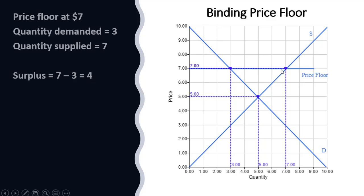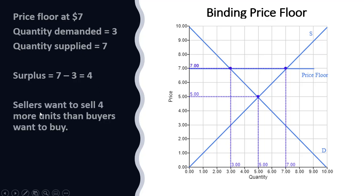We can visualize the size of the surplus as the distance between the demand and supply curve at a price of seven dollars — this line segment between the supply and the demand curve, which is four units. Seven minus three represents the size of the surplus. Sellers want to sell four more units than buyers want to buy if the price floor is seven dollars.